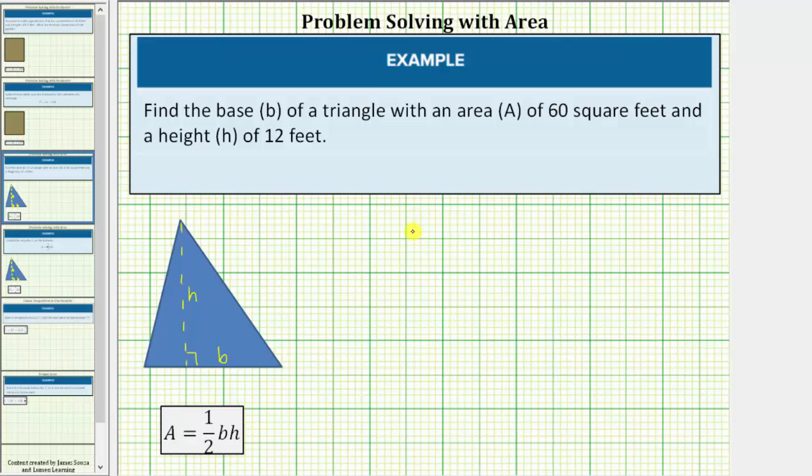So beginning with the formula, A equals one-half times B times H. Because the area is 60 square feet, we'll substitute 60 for A. So 60 equals one-half times B, the base, which is unknown.